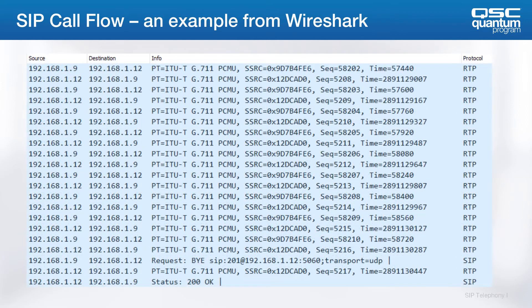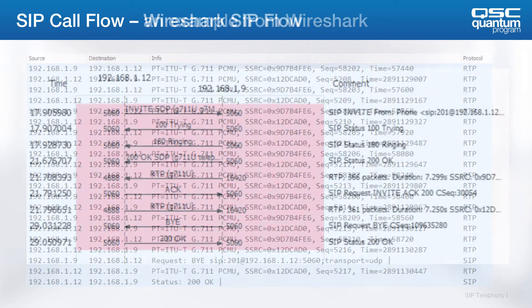At this point the BYE SIP packet takes over. You can see who sent the BYE and then the 200 OK, and then the RTP traffic should stop and the call should be disconnected.